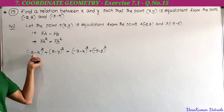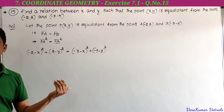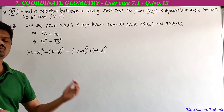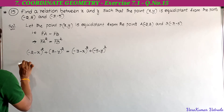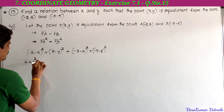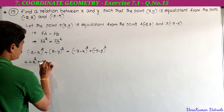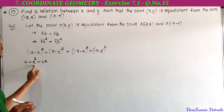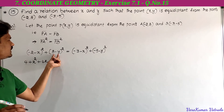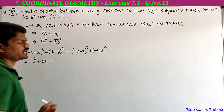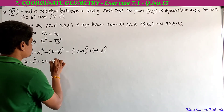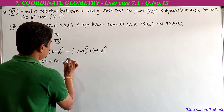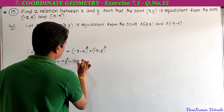Taking minus as common, (-2 - x)² becomes (2 + x)², and (8 - y)² stays as a minus b whole square. Expanding: (2 + x)² = 4 + x² + 4x, and (8 - y)² = 64 + y² - 16y. On the right side, (-3 - x)² becomes (3 + x)² = 9 + x² + 6x, and (-5 - y)² becomes (5 + y)² = 25 + y² + 10y.